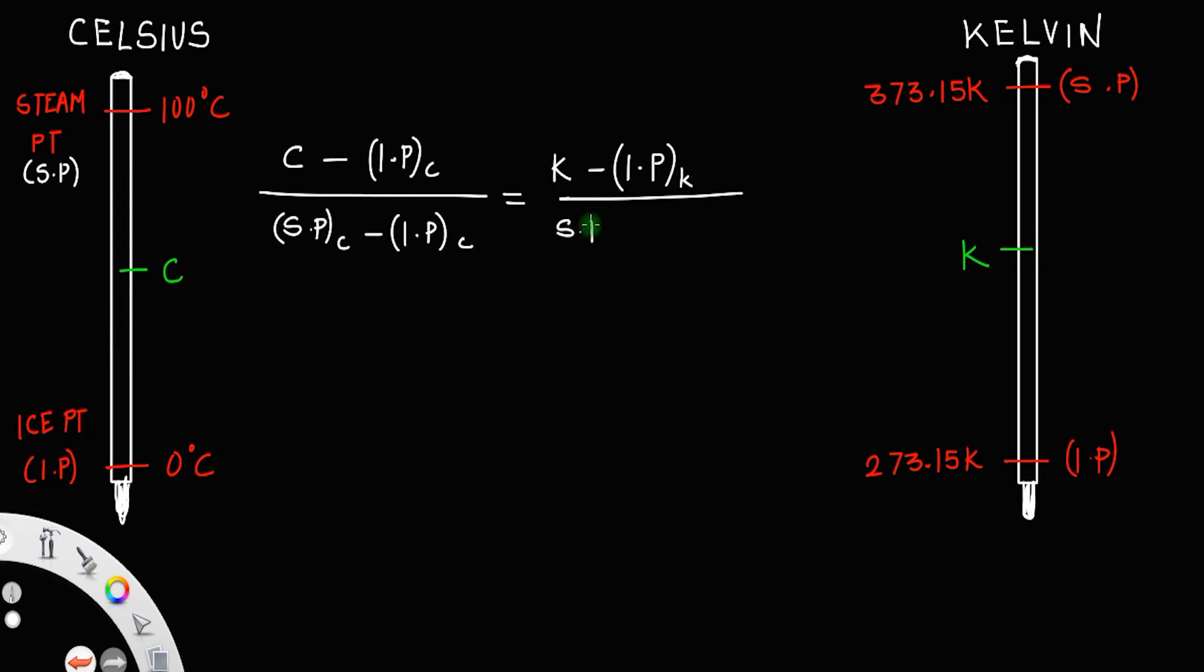So C minus 0, divided by 100 minus 0, is equal to K minus 273.15, divided by 373.15 minus 273.15.